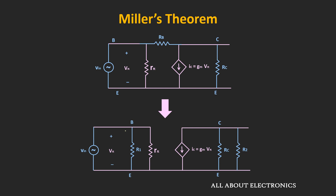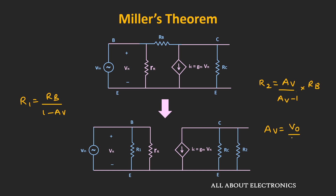Similarly, using Miller's theorem, we can represent resistor RB as two grounded impedances R1 and R2. Here, R1 = RB / (1−Av), while R2 = Av/(Av−1) × RB. Here Av is the voltage gain, that is Vout/Vin. Typically, since the voltage gain is much greater than 1, R2 can be approximately given as RB. Using Miller's theorem, it is now easy to find the amplifier parameters like the voltage gain, the input impedance, and the output impedance.